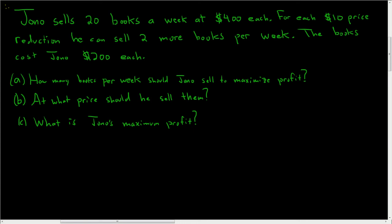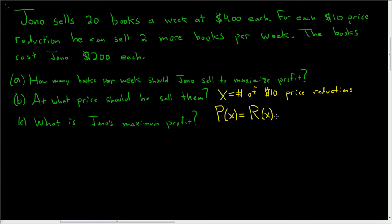So in this problem, we're told something about price reductions. So X is going to be the number of $10 price reductions. Normally in these problems, X is the quantity — so if you're selling 10 computers, X is 10. It's the number of things being sold. Here, X is the number of price reductions. The profit function is still the same: it's the revenue function minus cost. Profit is revenue minus cost. The revenue function is also the same, at least conceptually. Revenue is quantity times price.